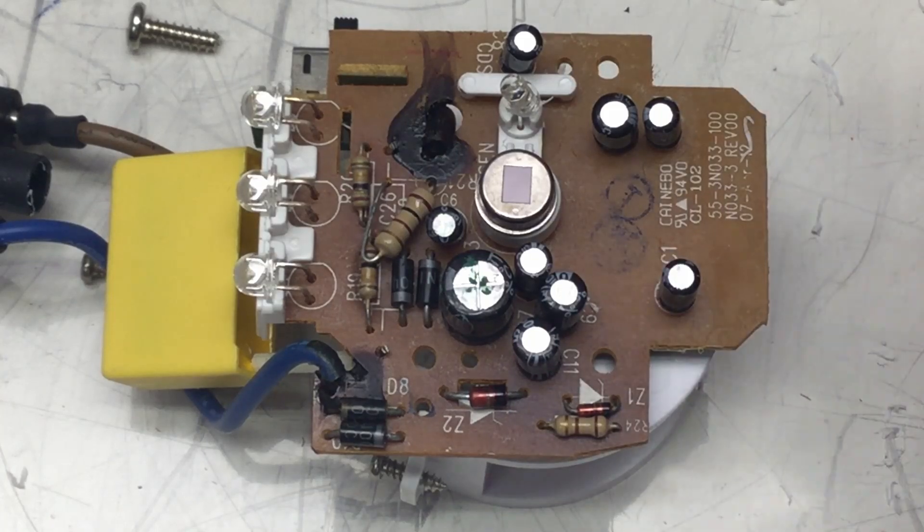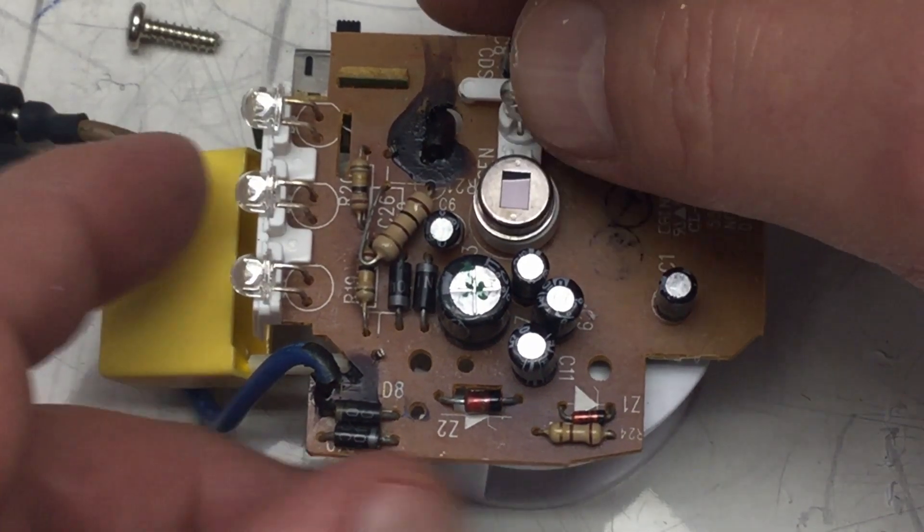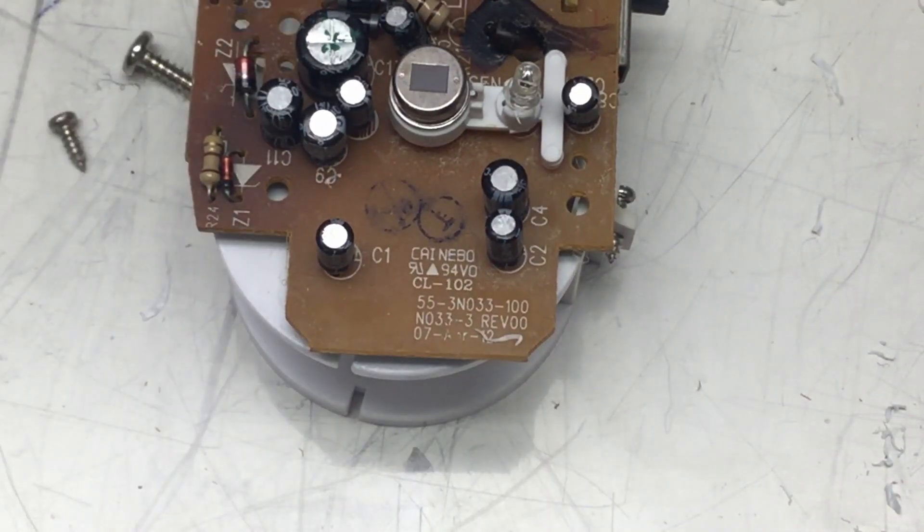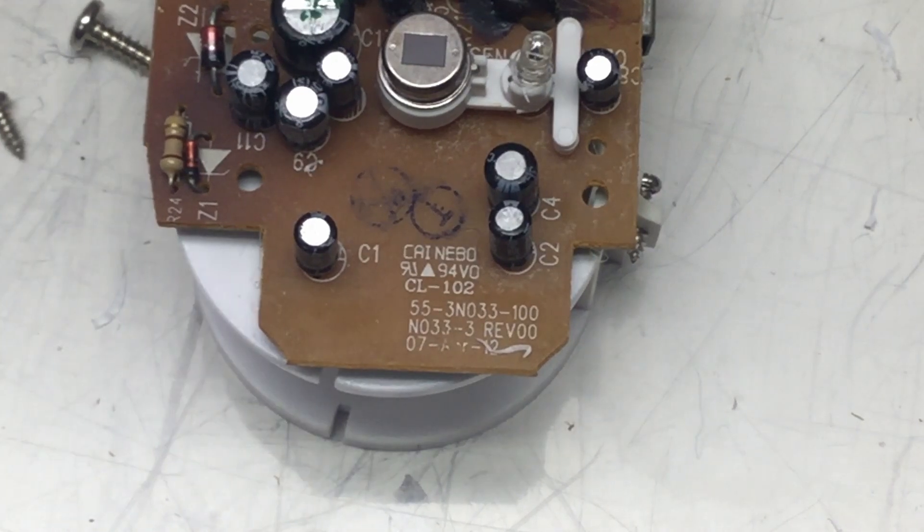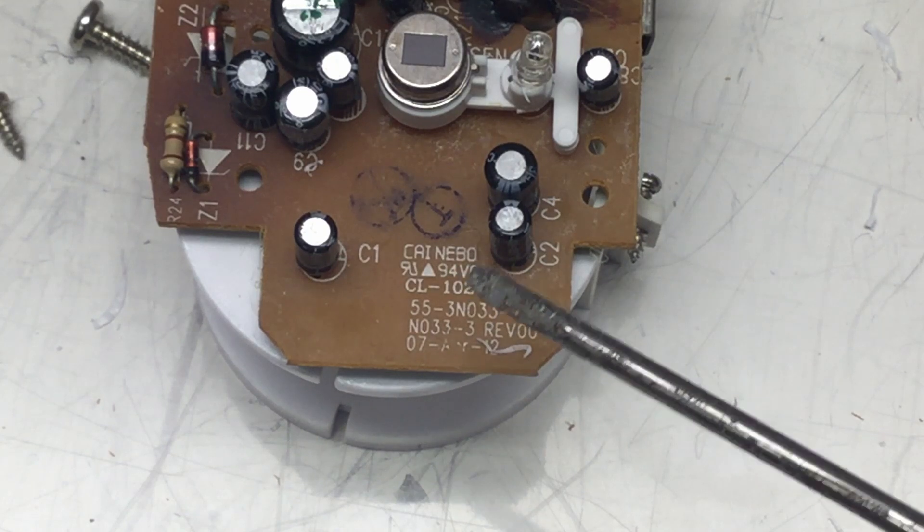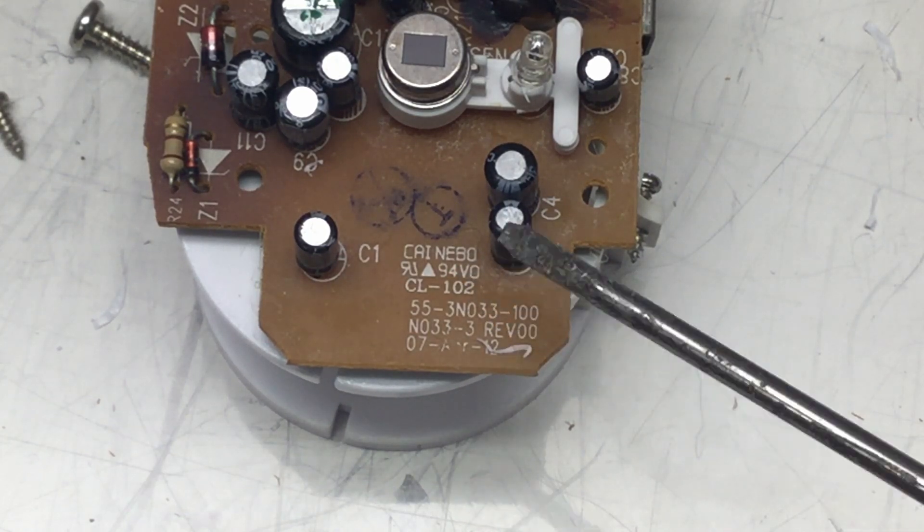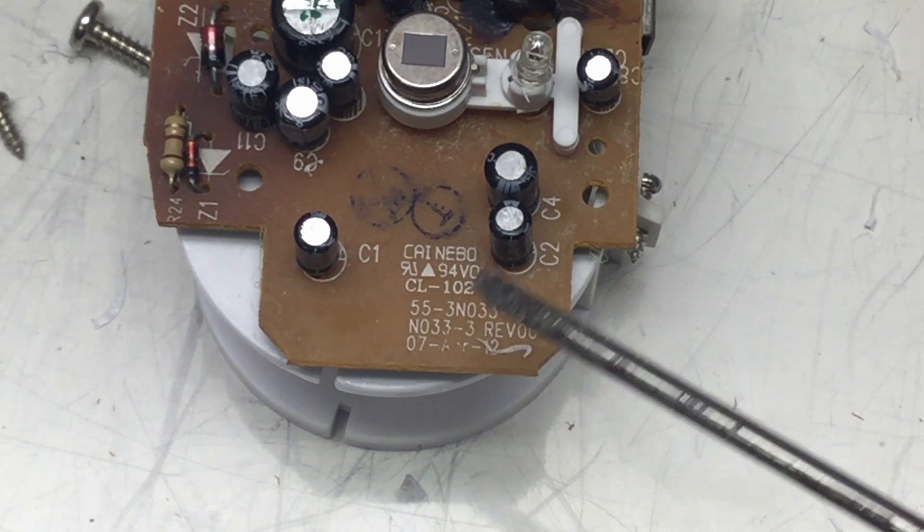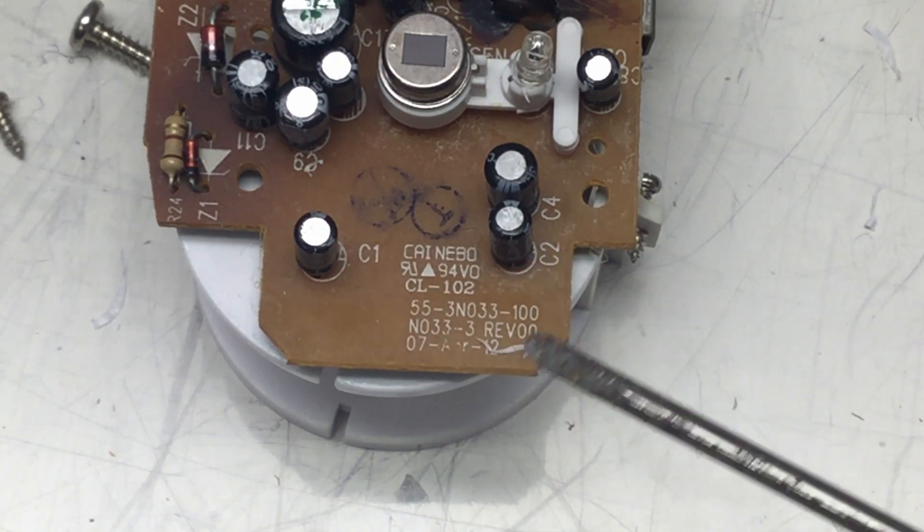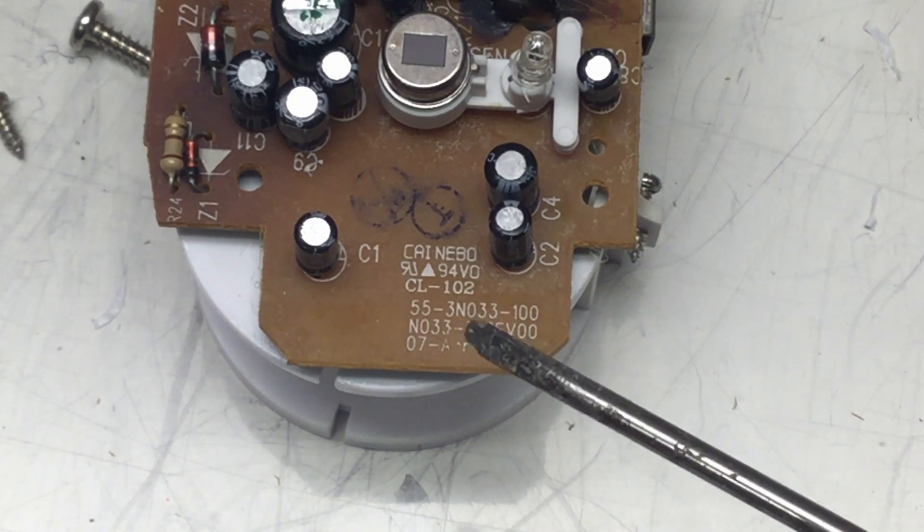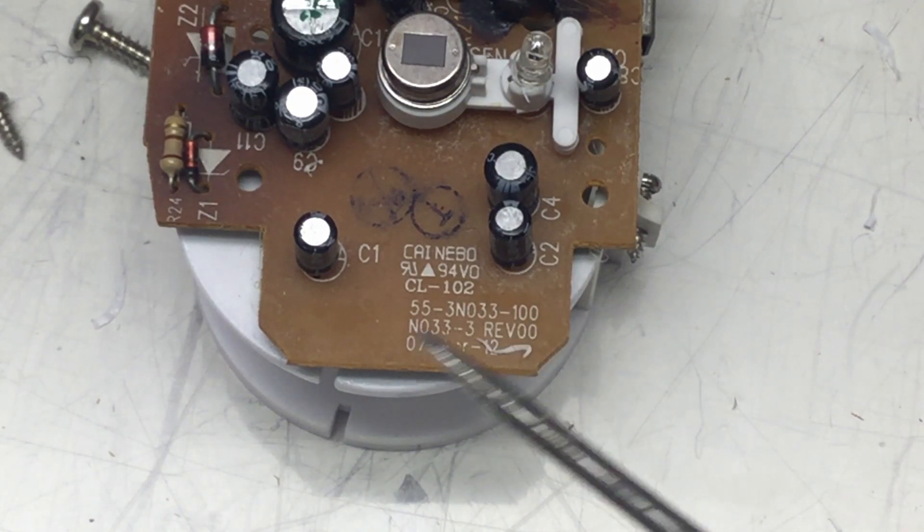Nothing out of the order. Just if you're interested in the type numbers here, I can zoom down a little bit more. So, C-A-I-N-E-B-0, N-E-B-0. It's zero probably. Revision zero zero.